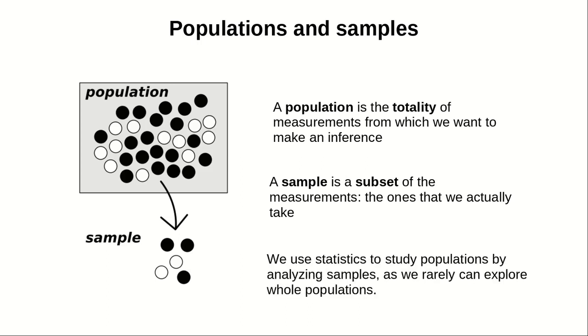For example, if you want to measure the average length of a carp in a pond, the population is the totality of lengths from all carps in the pond. This is impossible to measure. However, if we capture 20 individual carps from the pond, our sample is the subset of 20 measures from our collected carps.